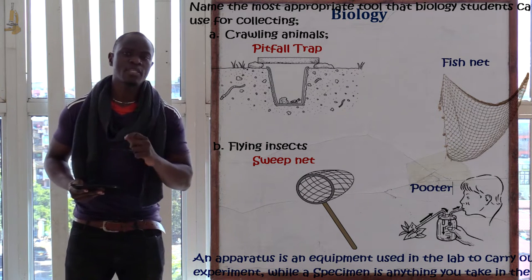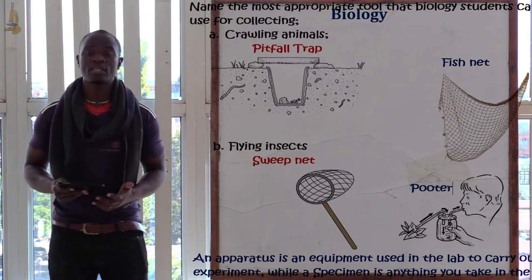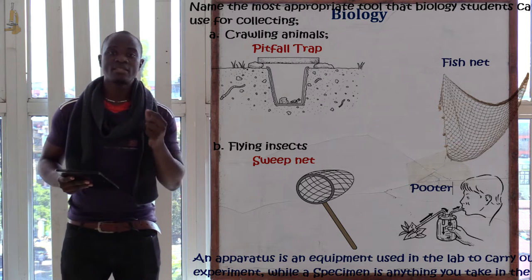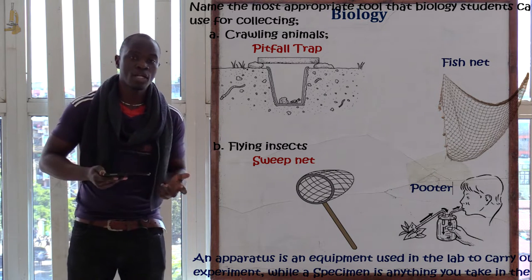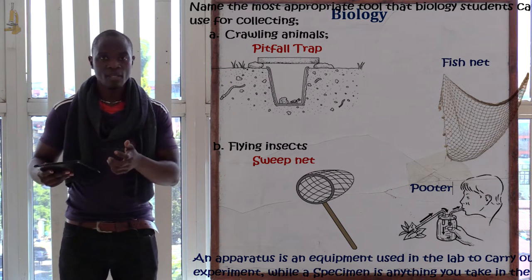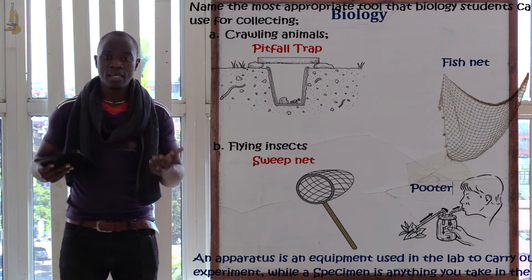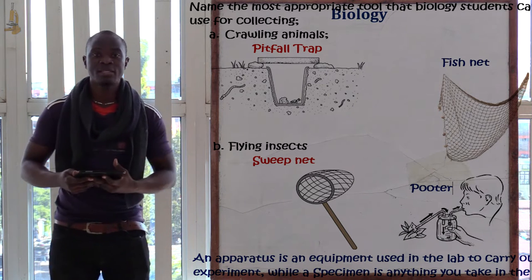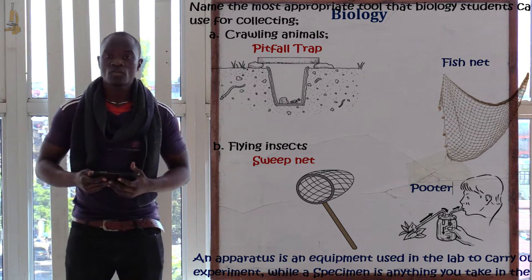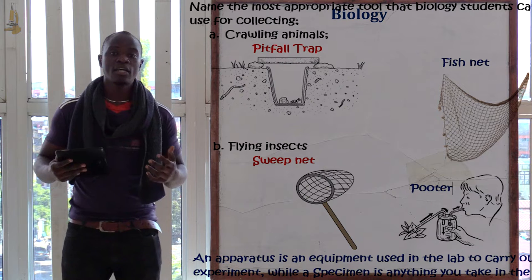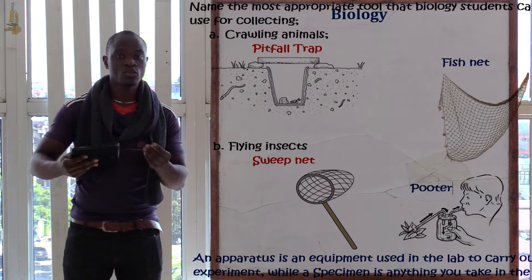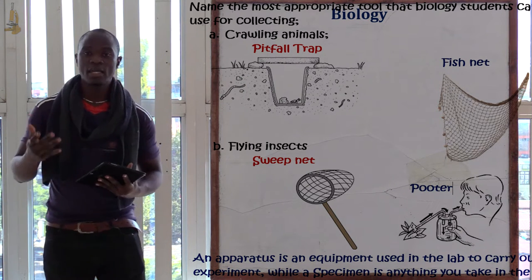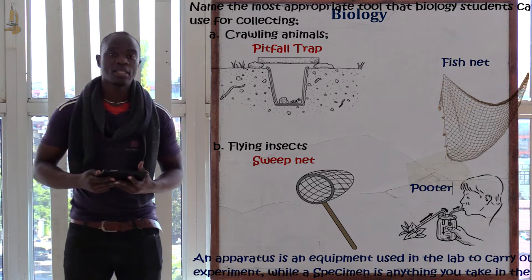In biology, we also have the term specimen. A specimen is anything taken into the laboratory for an experiment. So if you take any living organism into the laboratory to experiment on, that is a specimen. Anything you want to experiment on — if you take it to the lab — that automatically becomes the specimen.